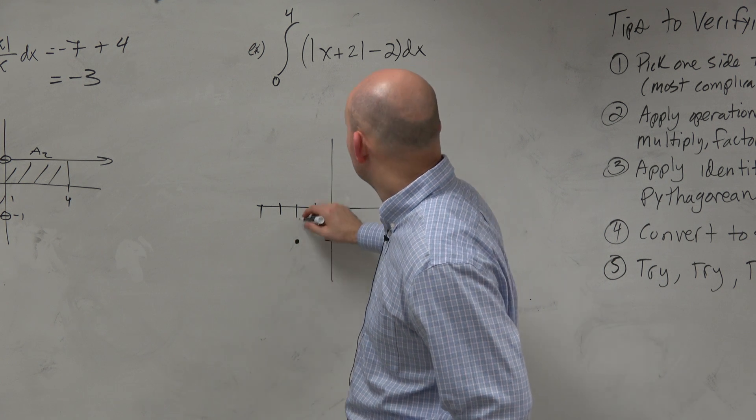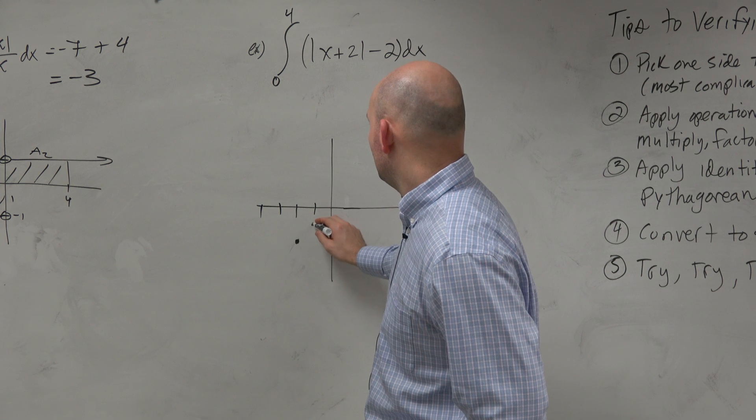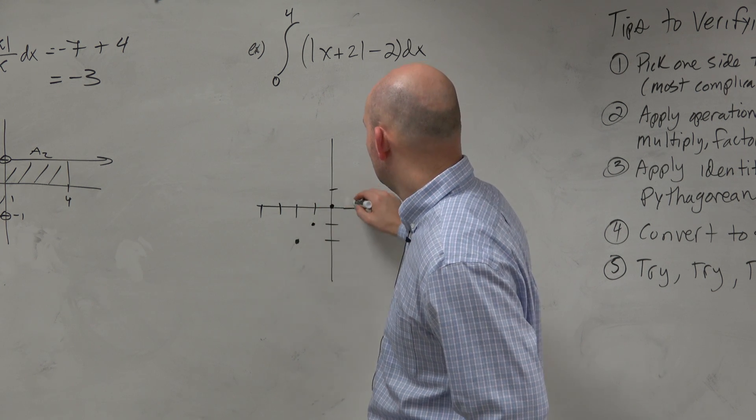So anyways, we're going from 0 to 4. This slope is up 1 over 1, up 1 over 1, up 1 over 1.